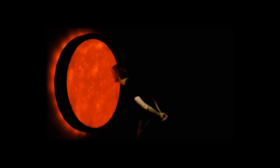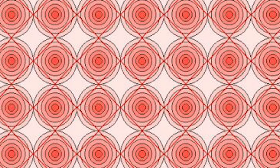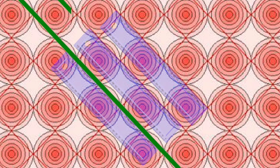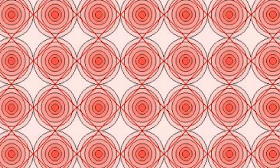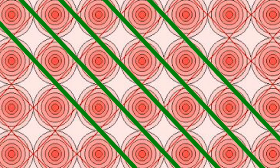Sometimes when your rods and cones attempt to give you an accurate interpretation of an image, they conflict. Look at this pattern. Can you tell if those lines are wavy or straight? They actually look wavy, but here's what happens when we put a ruler next to the lines — they're straight! This is an example of a distorting illusion. The concentric circles in the background affect how we see the lines. They appear to be wavy and distorted, but in fact, they are perfectly straight.